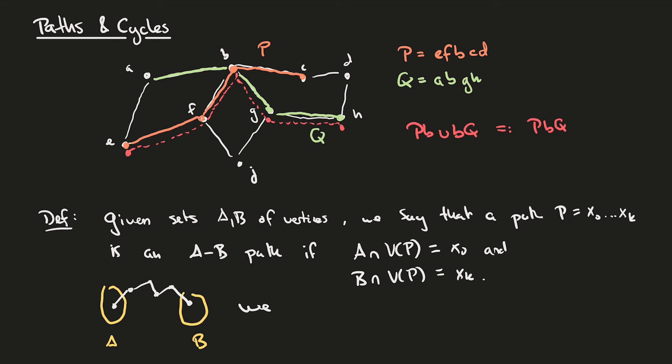Furthermore, we say that two paths are independent if they don't share internal vertices. For example, if we have a second path that starts at the same vertex as this path, but uses different vertices in between the sets A and B, and then ends at the same vertex as the path, this would be independent from the path.